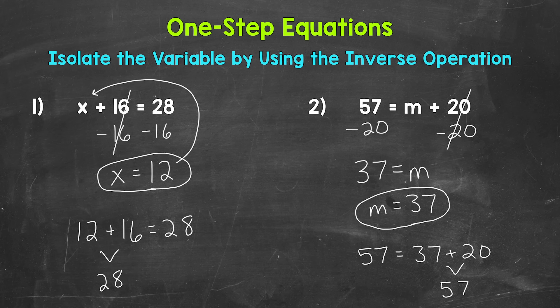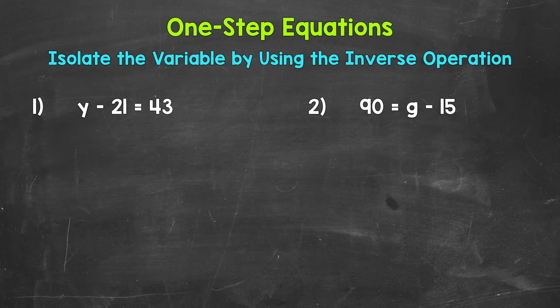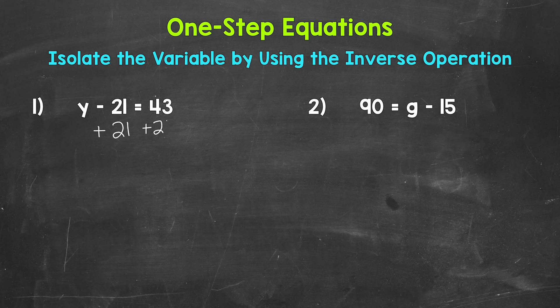So that's how we solve one-step addition equations. Let's move on to subtraction. Here are our examples of one-step subtraction equations. Let's jump into number one, where we have y minus 21 equals 43. Now we need to isolate that variable of y. We need to figure out what y equals. Since 21 is being subtracted from y, we need to undo that subtraction by using the inverse operation, so the opposite operation. The opposite of subtraction is addition. So let's add 21 to the left side of the equation. Now whatever we do to one side of the equation, we must do to the other in order to keep it balanced and equal. So we need to add 21 to the right side as well.